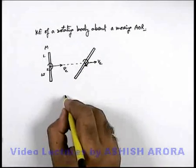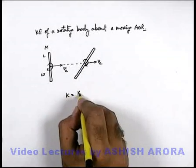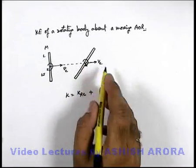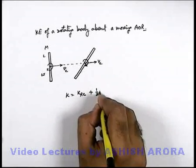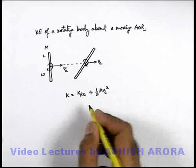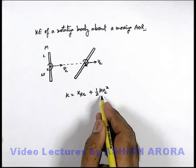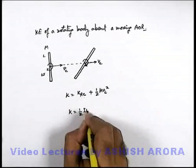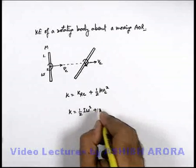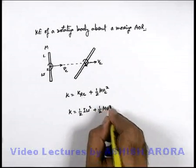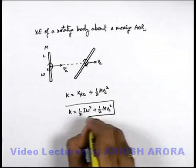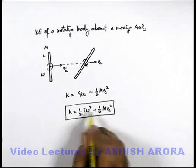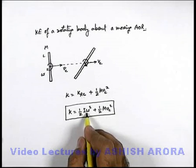One is due to the rotation about the center, and the other is due to the translatory motion of the center of mass. The total kinetic energy will be half I omega squared plus half m v_c squared. This half m v_c squared is the translational kinetic energy, and half I omega squared is the rotational kinetic energy about the center. So total energy will be half I omega squared plus half m v_c squared. This is the expression we use for total kinetic energy of a body which is moving translationally as well as rotating about its center of mass.